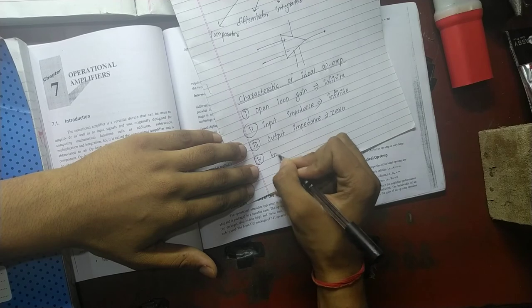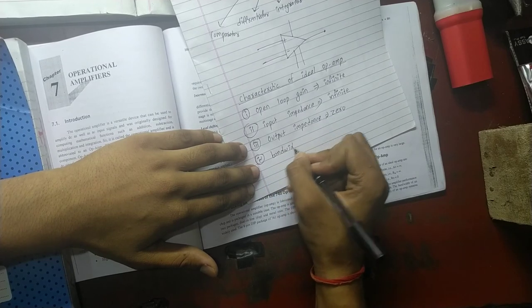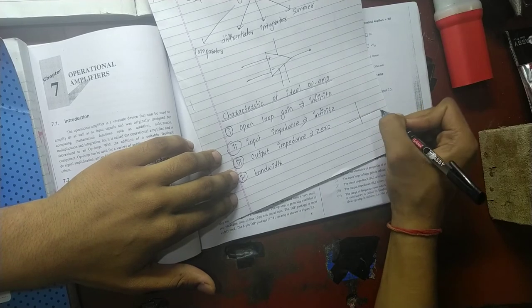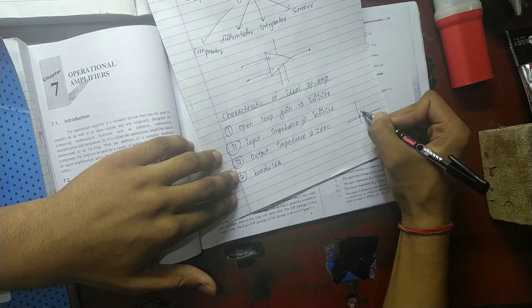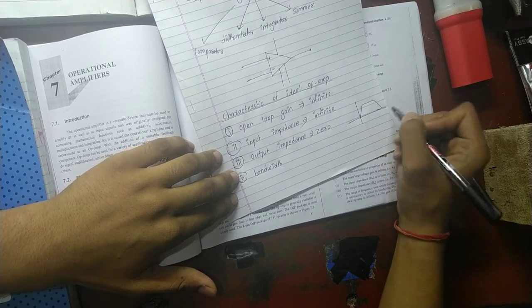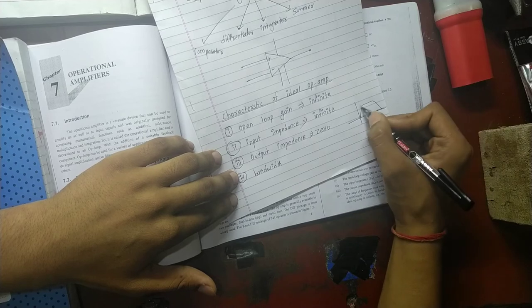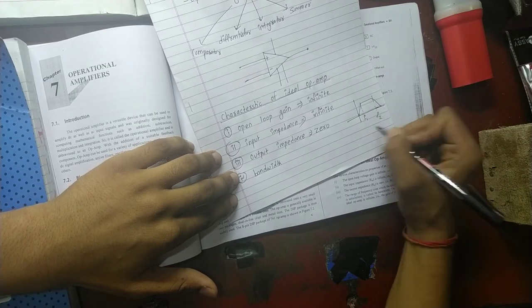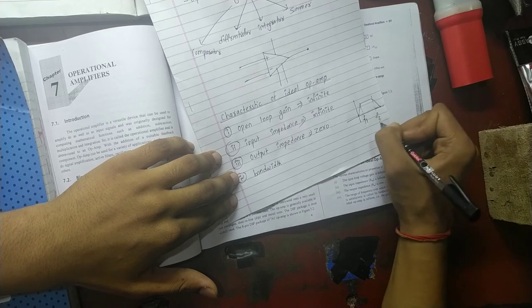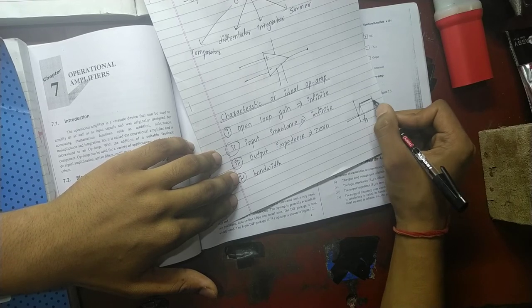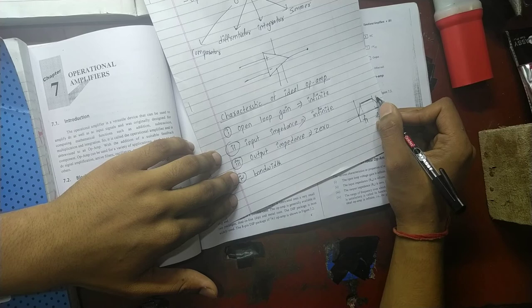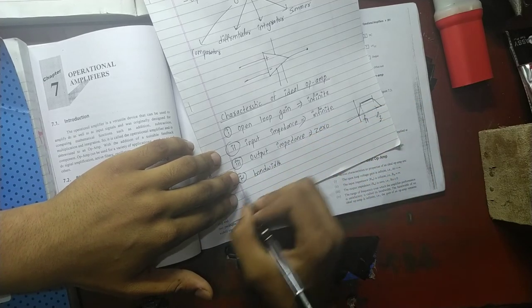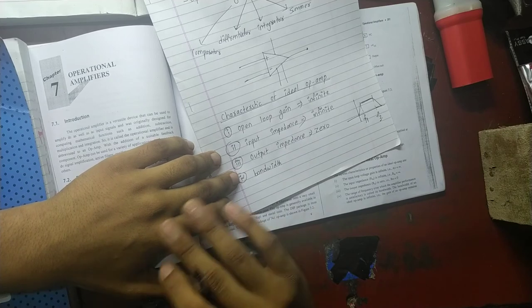The next characteristic is bandwidth. This is the bandwidth frequency range. For the ideal op-amp, the bandwidth range is infinite.